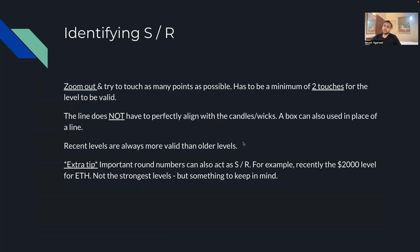Identifying support and resistance: how do you draw them? Simply, first zoom out — high timeframe support and resistance generally respects and plays out the best. You need a minimum of two touches on any level, ideally three. And recent levels are more valid than levels from two years ago.